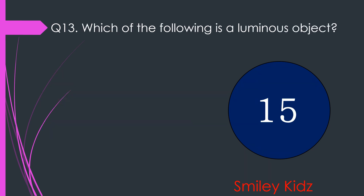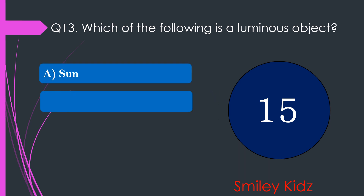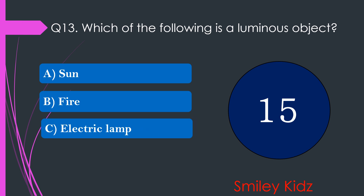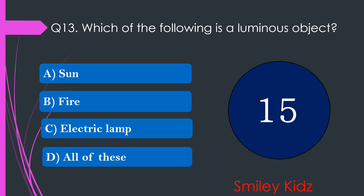Question number 13. Which of the following is a luminous object? The options are A. Sun, B. Fire, C. Electric lamp, or D. All of these. Your time starts now.